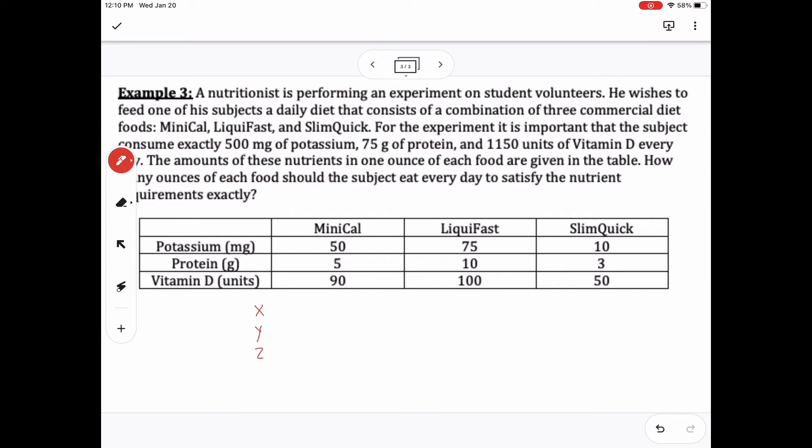it is important that the subject consume exactly 500 mg of potassium, 75 g of protein, and 1150 units of vitamin D every day. The amounts of these nutrients in one ounce of each food are given in the table. How many ounces of each food should the subject eat every day to satisfy the nutrient requirements exactly?